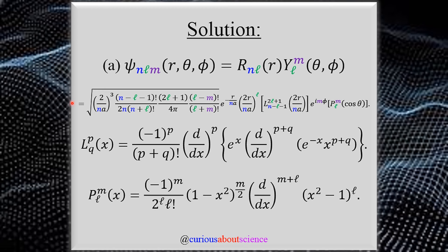More detail is shown in the PDF. We have the associated Laguerre polynomial and the associated Legendre polynomials in their combined forms. This is a pretty hefty task and you might be better off using tables or a computer to calculate these. Nonetheless, we have to find the ground state, which is n=1, l=0, and m=0.